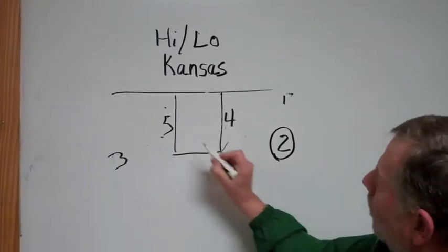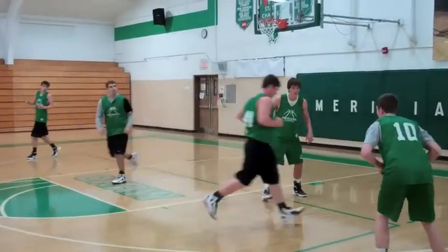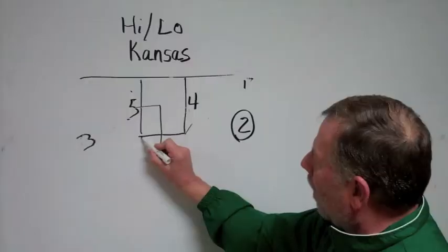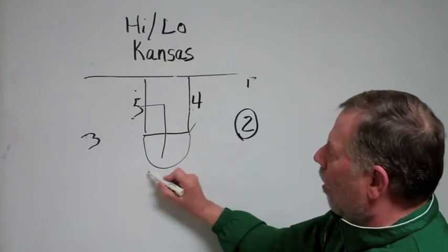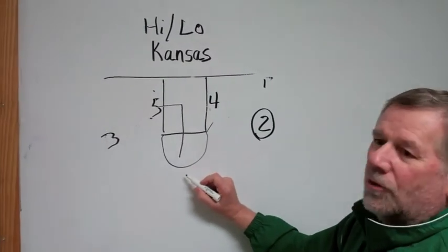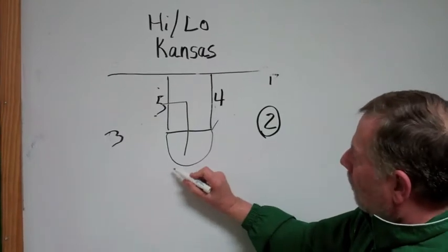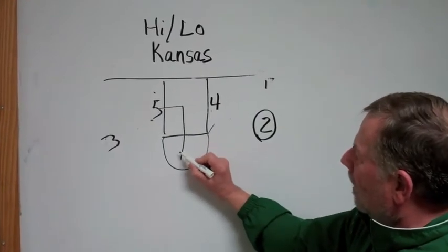Two has the ball, and when two gets the ball, five will make an L-cut, and we hope he can come to the top of the key out here and catch the ball and have a three-pointer if left open. Most of the time, big guys aren't great shooters from outside, so they try to catch it in here some, and that's okay.